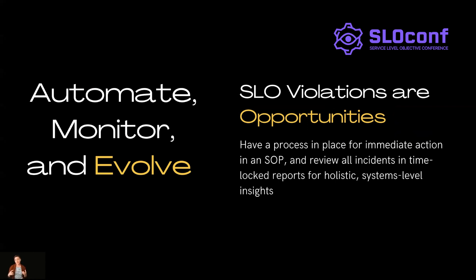Having a process in place as you start to burn down those error rates or go into an incident allows you to risk-manage when you have a major incident and implement an automated or semi-automated statement of process. You also want to have, either quarterly or monthly, a time-locked way of reviewing all these incidents or the velocity of the burn rates of your error budgets — looking at system-level insights to think about your architecture and business value as being totally aligned, with the Venn diagram of those being your SLOs.